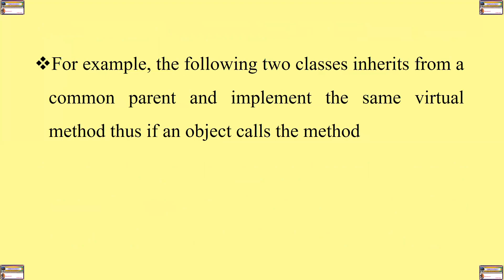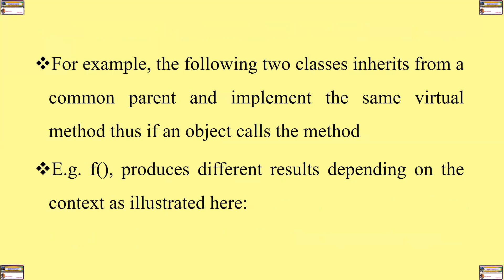For example, if two classes inherit from a common parent and implement the same virtual method, then an object calling that method — such as function F — will produce different results depending on the context, as illustrated below.